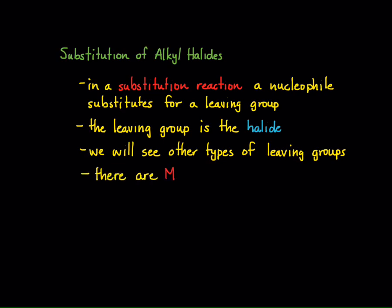We also have to understand there are many, many different types of nucleophiles. So this is going to lead to a whole bunch of reactions in which you get different products. But the whole gist of this particular chapter is that there is a general reaction that takes place where you have a nucleophile that reacts with a substituted alkane, where X is the leaving group.